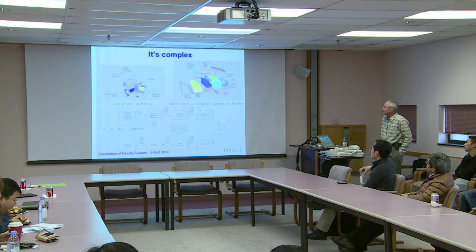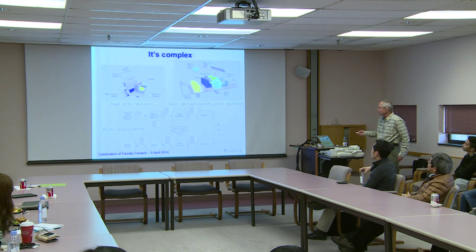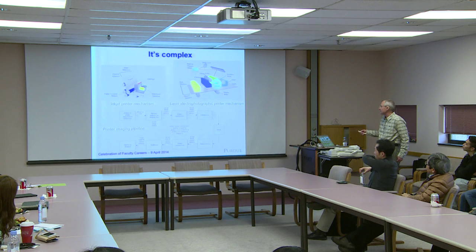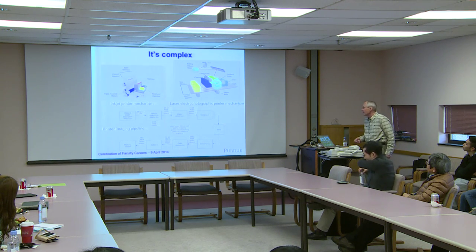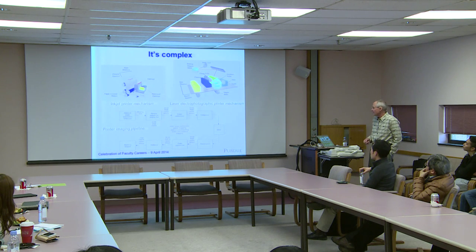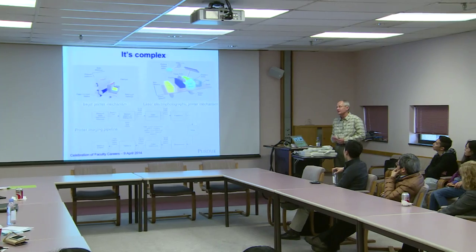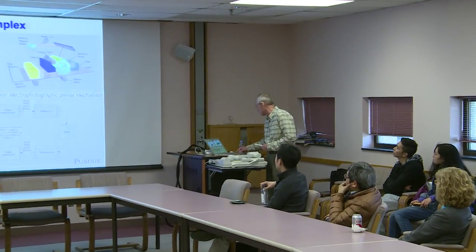What makes the printing industry interesting is that it's an incredibly complex process. Here's the architecture of a typical inkjet printer and a typical laser electrophotographic printer — many mechanisms, gears, all kinds of things. The part I've been most involved with is the imaging pipeline, which is also quite complex with many different steps. One of the things I found when I first started working with HP was that the last little box in the pipeline called halftoning is the one that actually consumes the most resources on the entire pipeline.